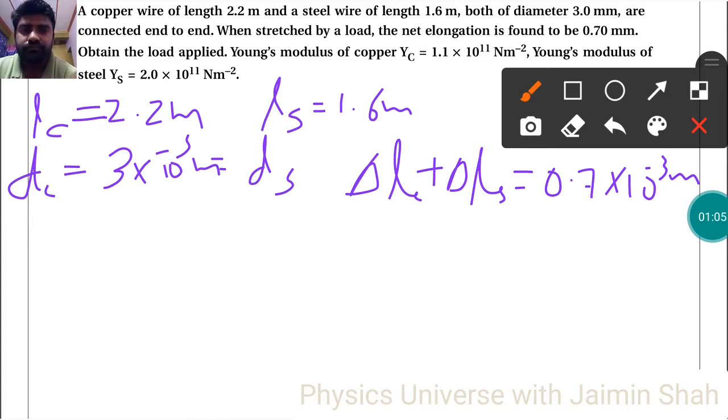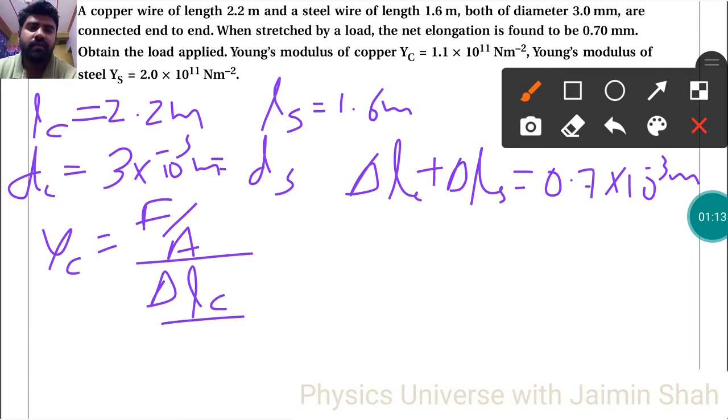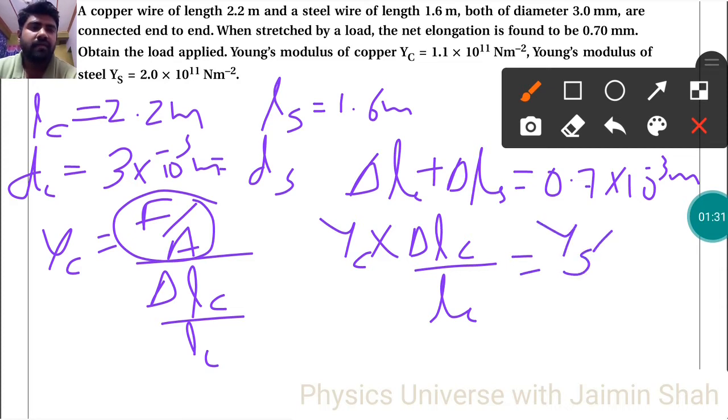Now see here, for first copper, Yc is equal to stress F upon A upon delta Lc upon Lc. So we can write Yc into delta Lc upon Lc is equal to Ys into delta Ls upon Ls.